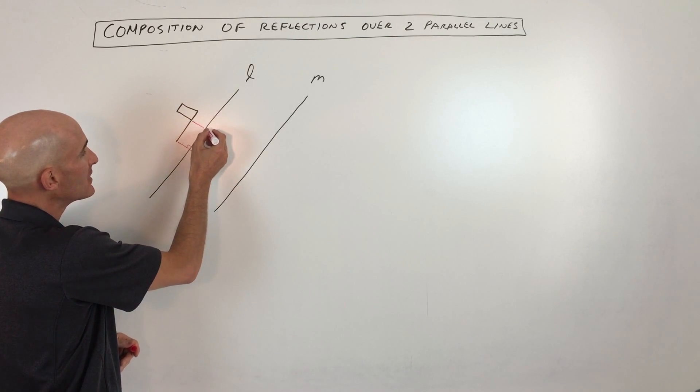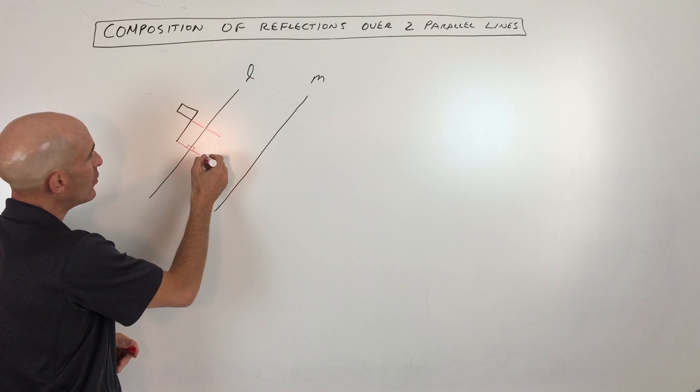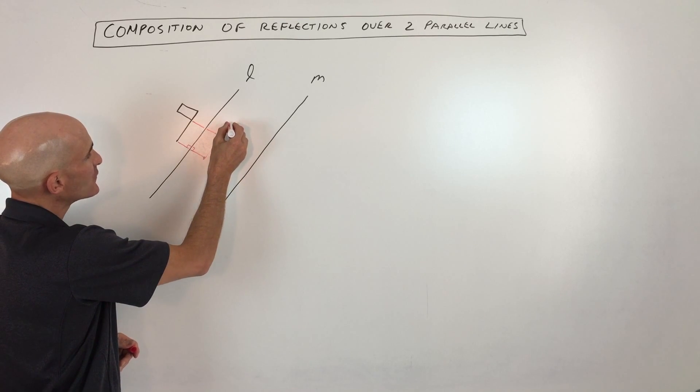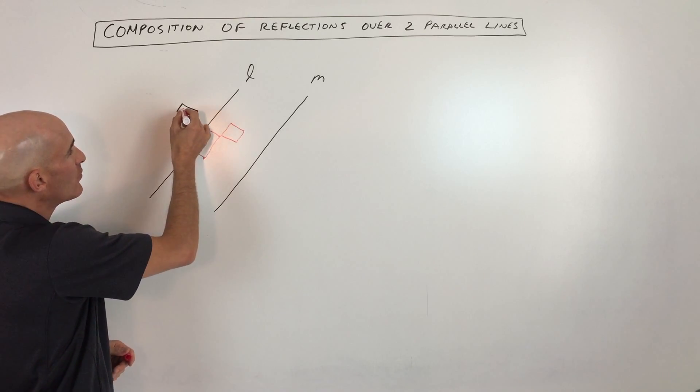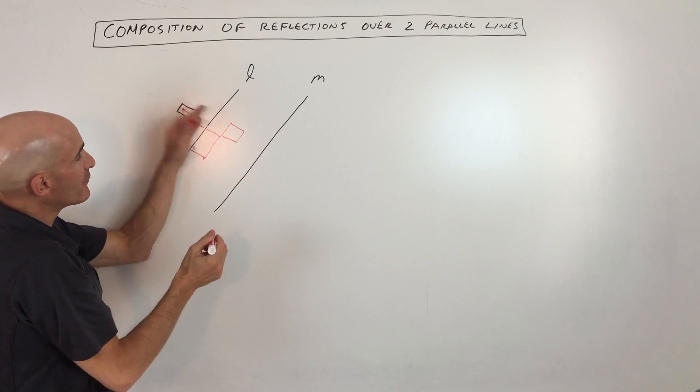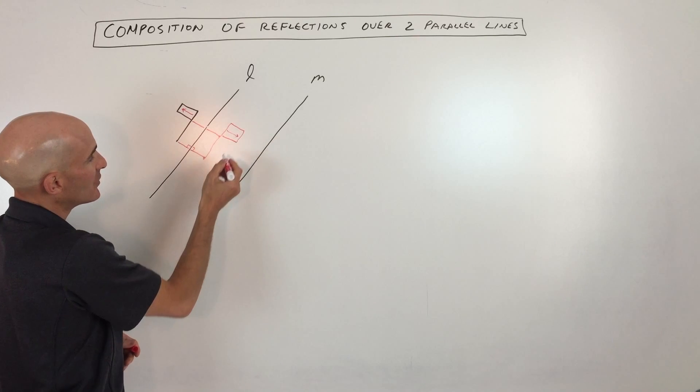But you want to think about going perpendicular the same distance. So if I do that, I'm just drawing this freehand, but what you can see here is originally this flag was pointing to the left, right? When we reflect it, now it's pointing to the right, okay?